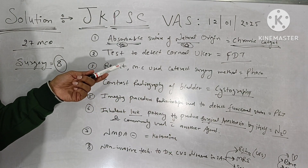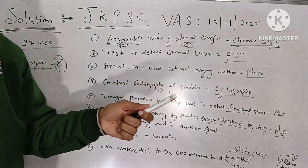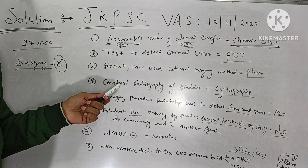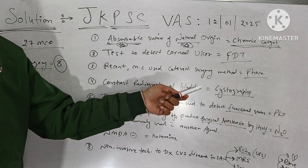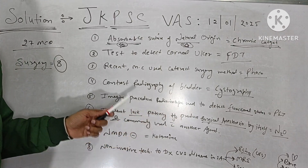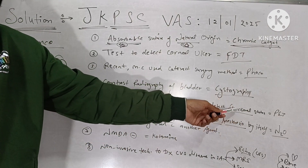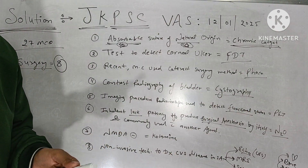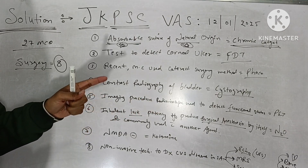The most recent and commonly used cataract surgery method — extracapsular and intracapsular are the old methods — the recent one is phacoemulsification. For contrast radiography, if you inject the contrast agent inside the urinary bladder to find out lesions, it is known as cystography. A procedure where radioisotopes are used to detect the functional status of an organ or tissue is the PET scan — positron emission tomography.